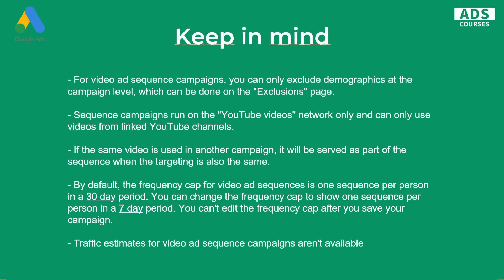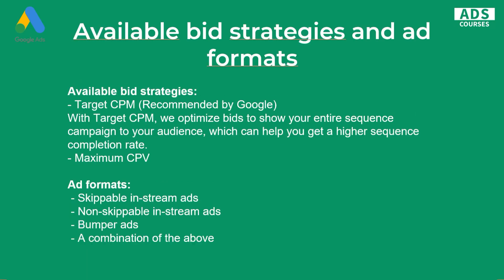Traffic estimates for video ad sequence campaigns aren't available right now. As mentioned, you can only use CPM or cost per view. Available ad formats are skippable in-stream ads, non-skippable in-stream ads, bumper ads, and combinations of the above.